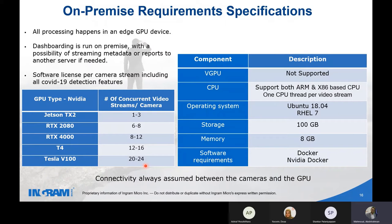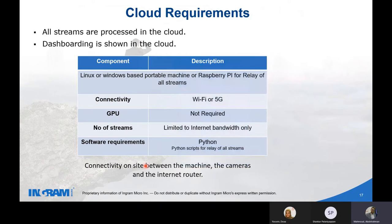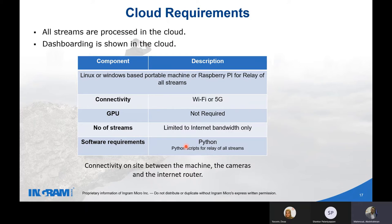For the cloud deployment option, you don't need special hardware — just good connectivity to send video streams to the cloud and receive results. To send streams, you need a machine that can be as simple as a regular laptop or even a Raspberry Pi, as long as it can run Python code to relay streams to cloud endpoints.